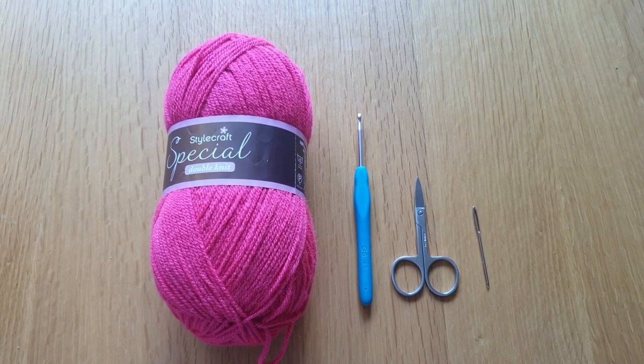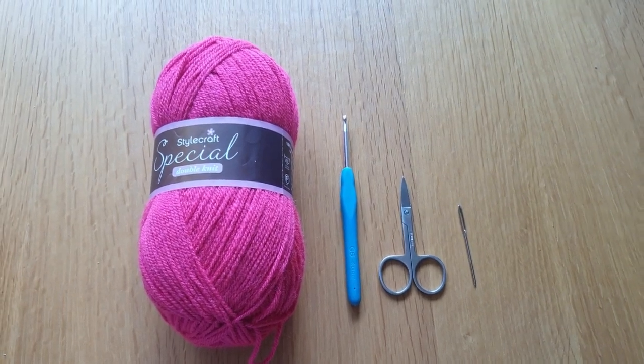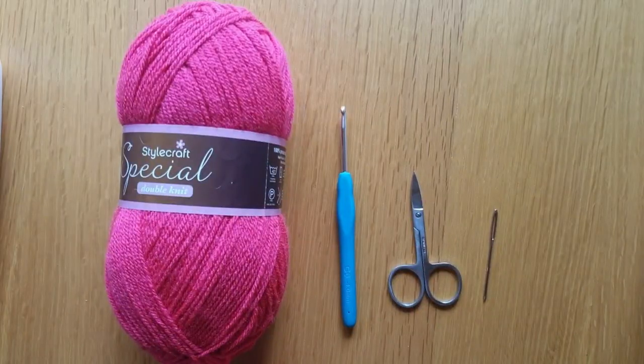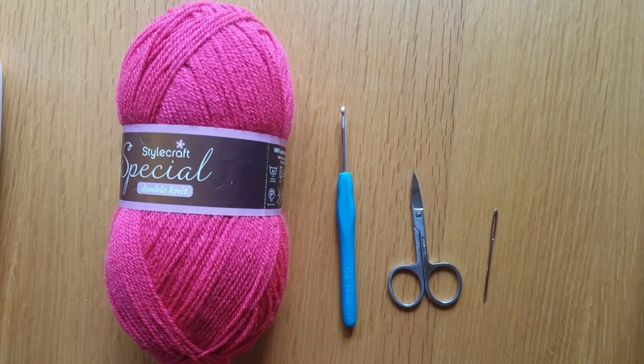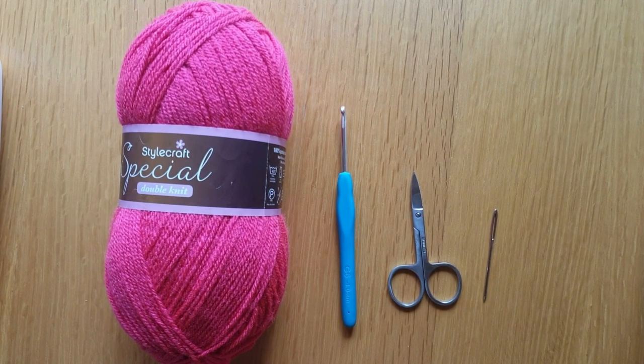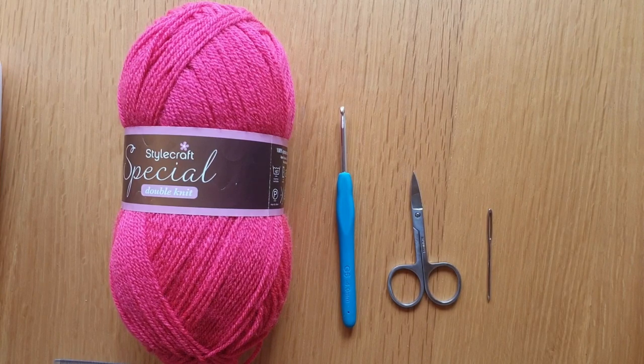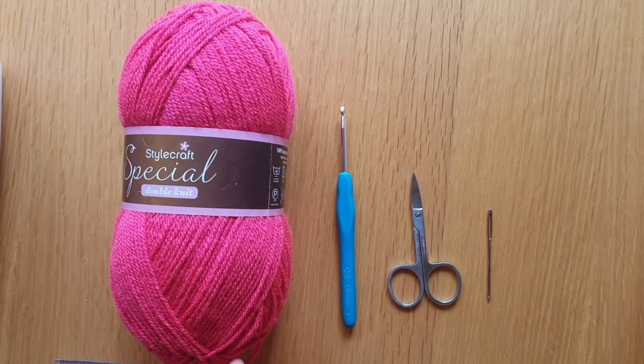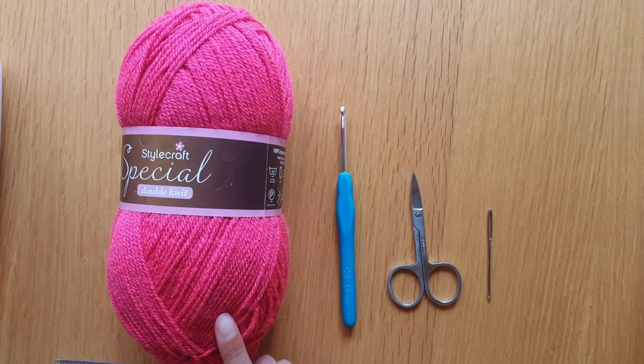Hi everyone, welcome back. Today we are going to create a flower. In this video you will learn the chain stitch, slip stitch, and double treble crochet. I am using Stylecraft Special DK in the color pomegranate, a 4mm crochet hook, scissors, and darning needle to sew in your ends.